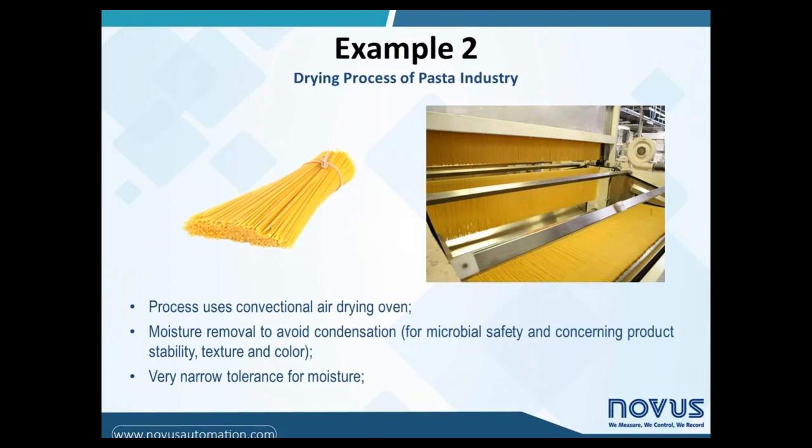The last example requires indoor thermal comfort. The main issue is to control temperature within limits and to remove air moisture, keeping it within a fine band. An additional requirement is to improve air quality, which demands exchange of air to the outside. RHT Climate is suitable here, and both output alarms can be used to control the operating bands for humidity and temperature.